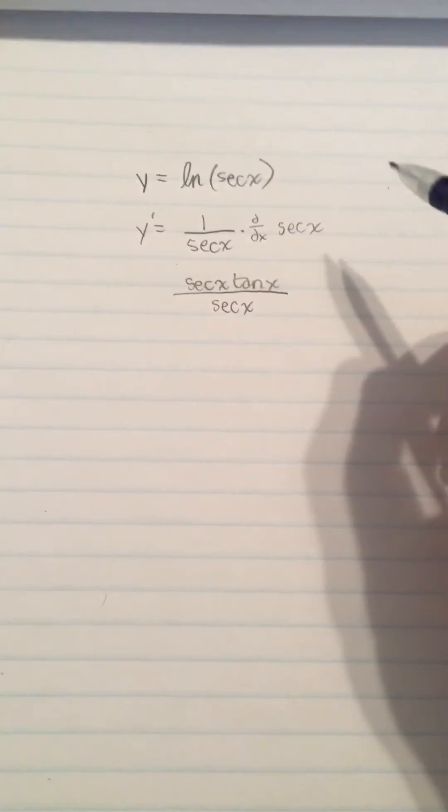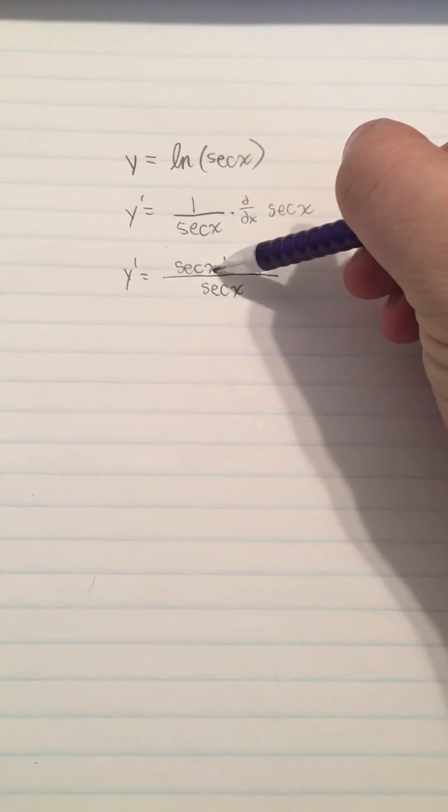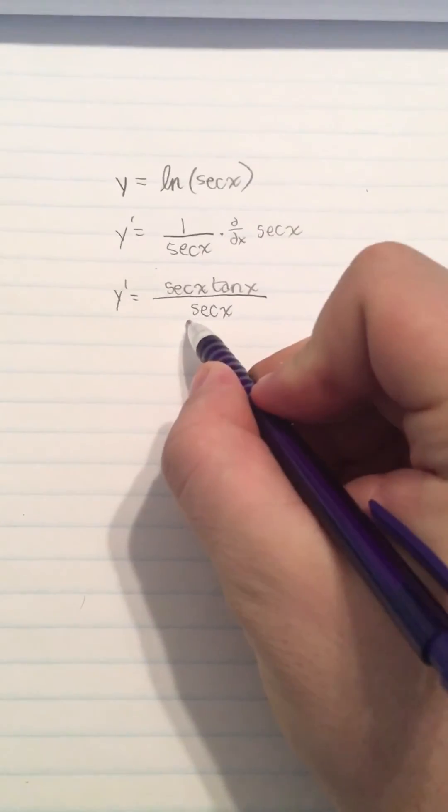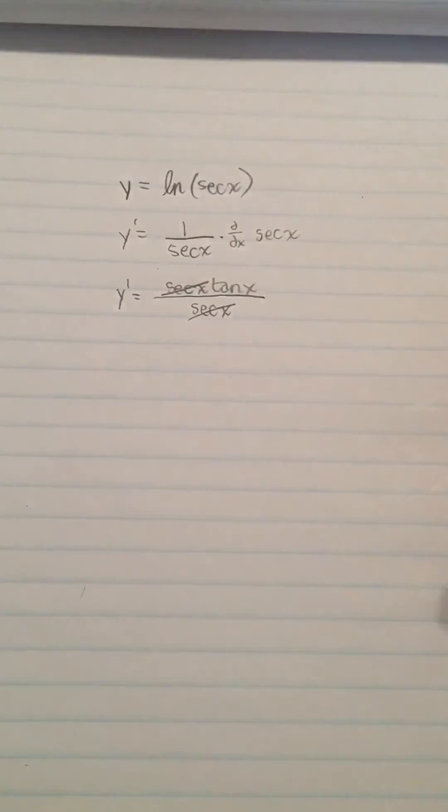Okay, so clearly here we have secant x on the numerator, secant x in the denominator. We know that these will cancel out. So let's cancel those out.